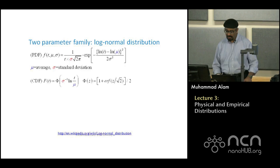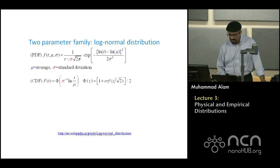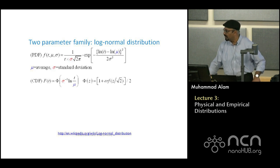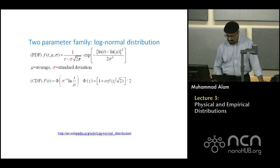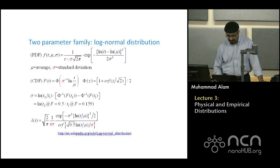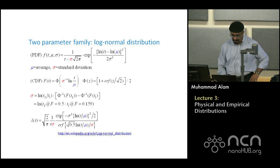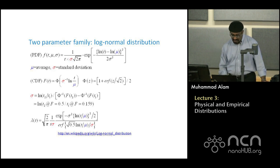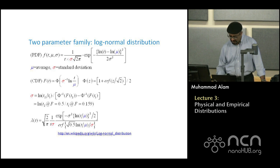Another two-parameter distribution is log normal. The only difference from normal is that the variable t is replaced by log t, and mu is replaced by log mu. So it is the same normal formula with variables transformed from t to log t. You can integrate it to find the corresponding cumulative distribution function. There is also the probability distribution function and the cumulative probability distribution, plus the failure rate, which I will explain shortly.